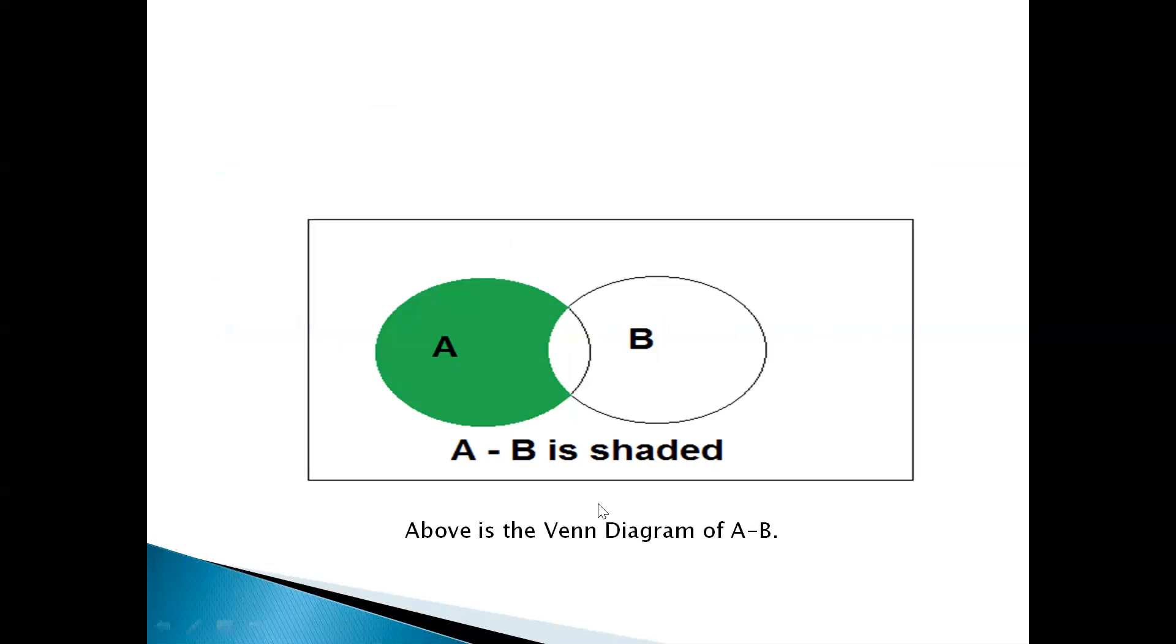Now, it is a Venn diagram representation and here A and B are both sets. This part is a common part of A and B. Now, when we subtract B from A, that time it will remove the common part or eliminate the common part. So, the shaded part denotes A minus B.